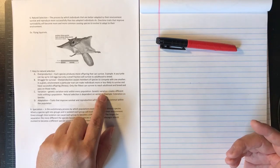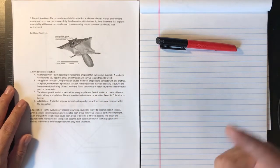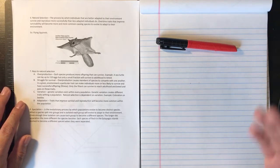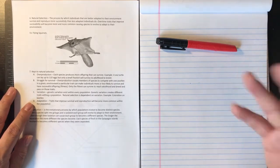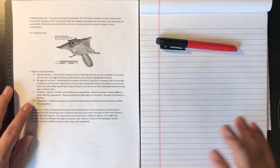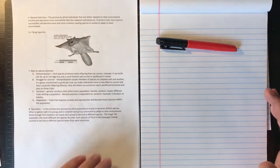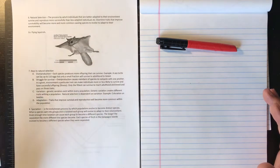It's the same for almost every single organism on planet Earth, believe it or not. Even asexually reproducing organisms, because they do have mutations that occur here and there that give them variations, albeit smaller than sexually reproducing organisms. And finally, D: adaptation.